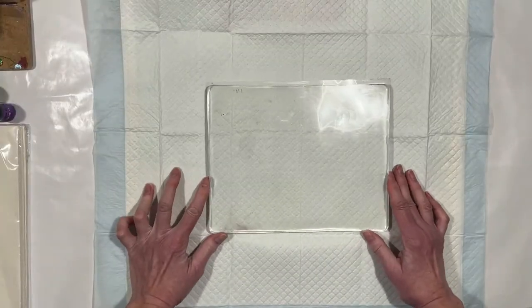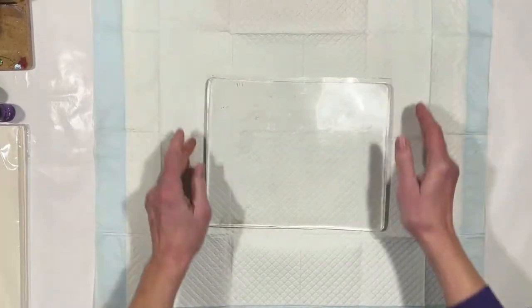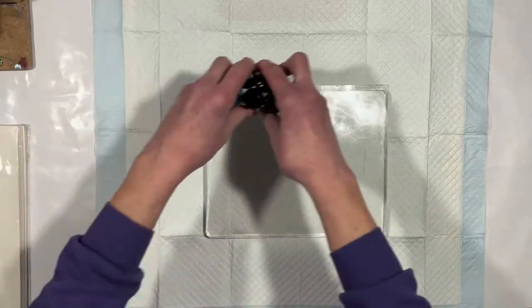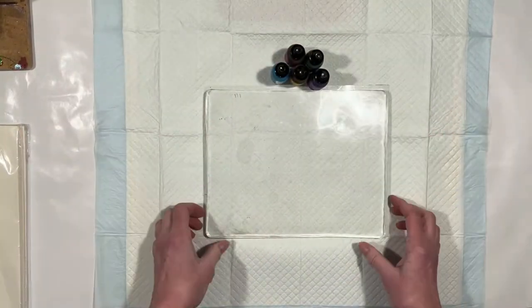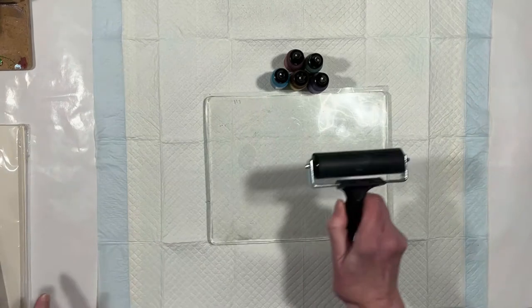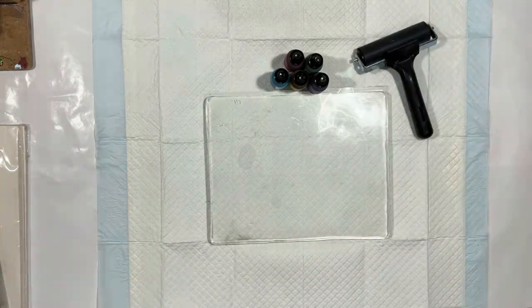And frame, okay. The main reason I wanted to do this is just because I have a tendency to fling alcohol inks around, this will catch them and hold them. So I have my brayer, and I have my paper.